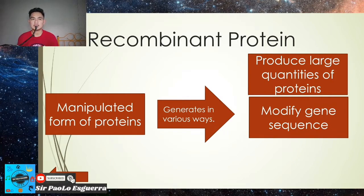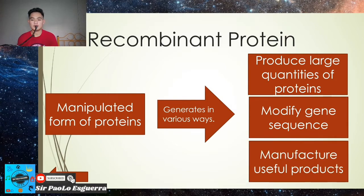For example, in corn — when it undergoes recombinant protein, its gene structure is changed. Think of it like an architect changing the layout of a design. And lastly, the goal is to manufacture useful products. That is what recombinant protein is about.